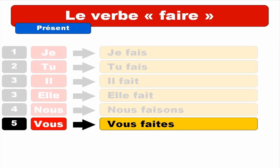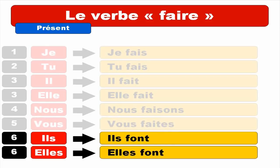And then finally, ILS masculine and ELLES feminine. ILS FONT — you get this nasal O-N sound, and the final T is not pronounced. ILS FONT. Repeat. And then feminine form — ELLES FONT. Same thing, O-N, and final T is not pronounced. ELLES FONT. Repeat. ELLES FONT.